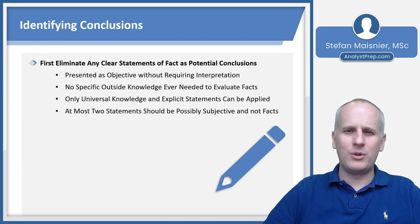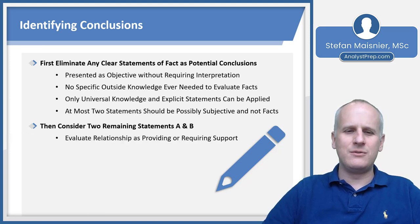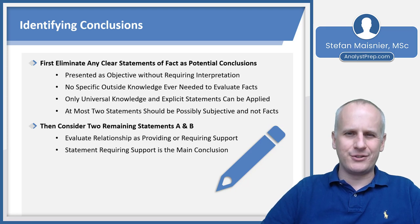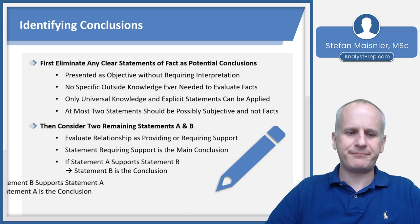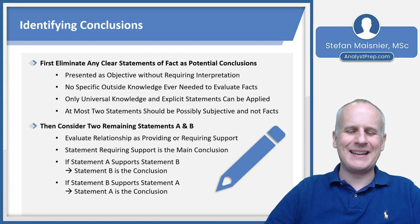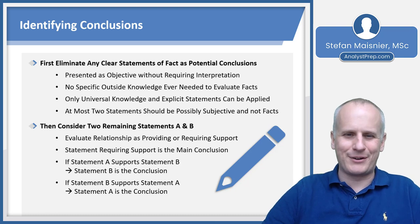Generally, at most two statements will possibly be subjective and not facts. Once you've eliminated the statements of fact, consider the two remaining statements as A and B, and evaluate the relationship between them as either providing or requiring support. The statement that requires additional support — meaning you don't believe it on its own — is your main conclusion. If statement A supports statement B, then B is the conclusion. If statement B supports statement A, then A is the conclusion. Your conclusion must always be the single statement that stands alone least supportedly.